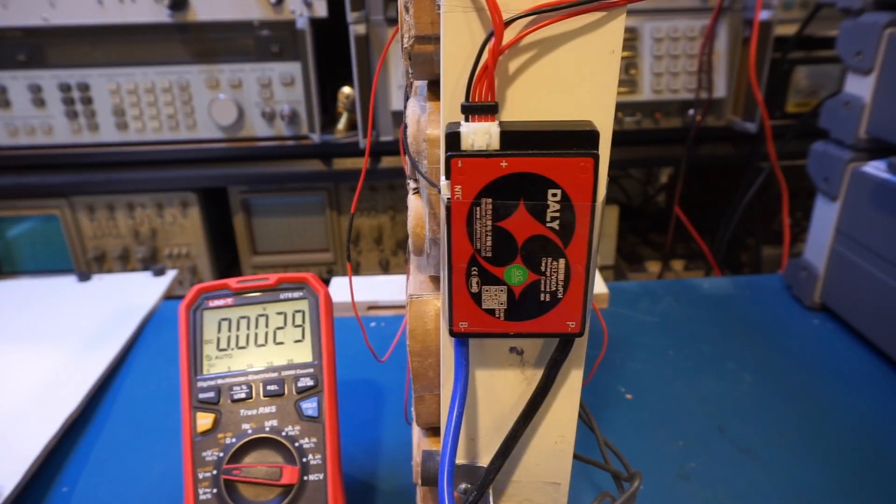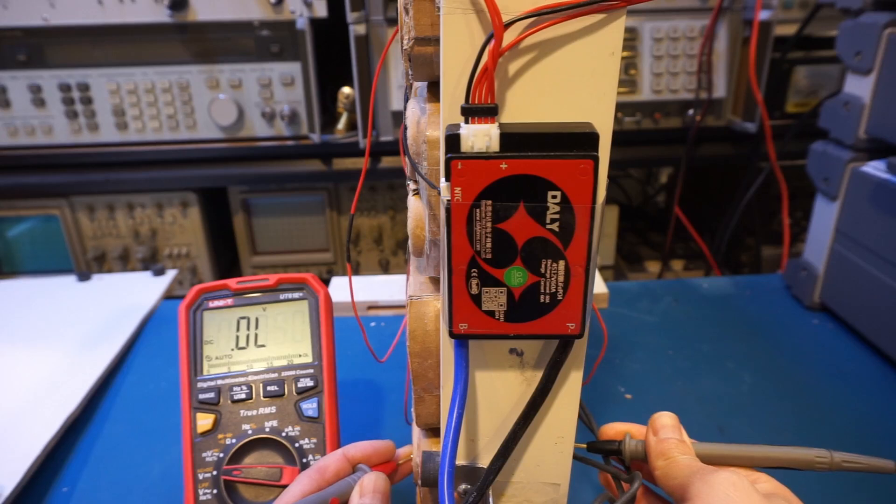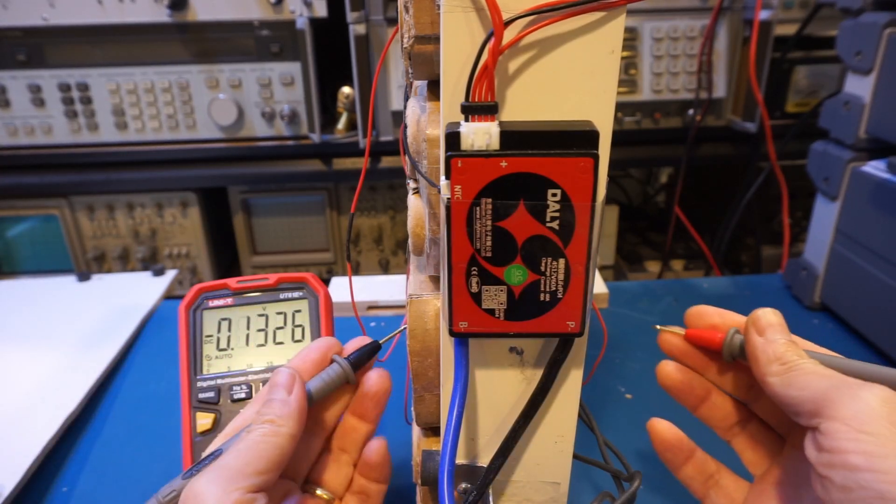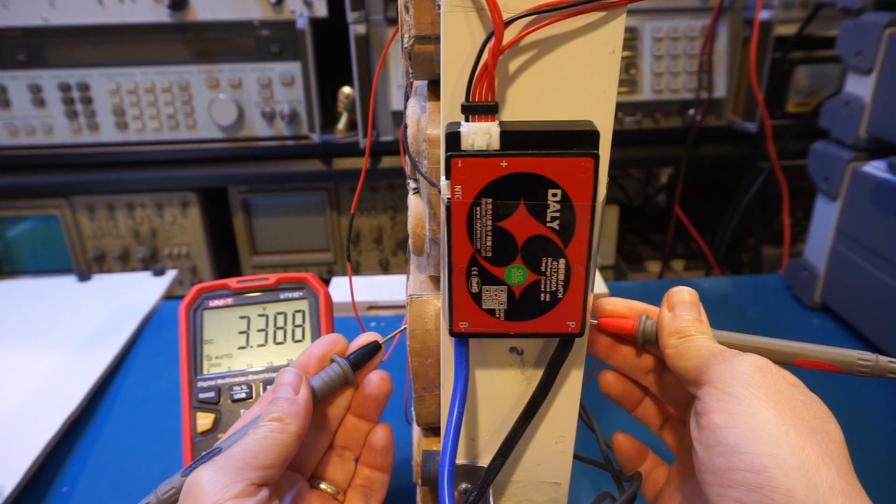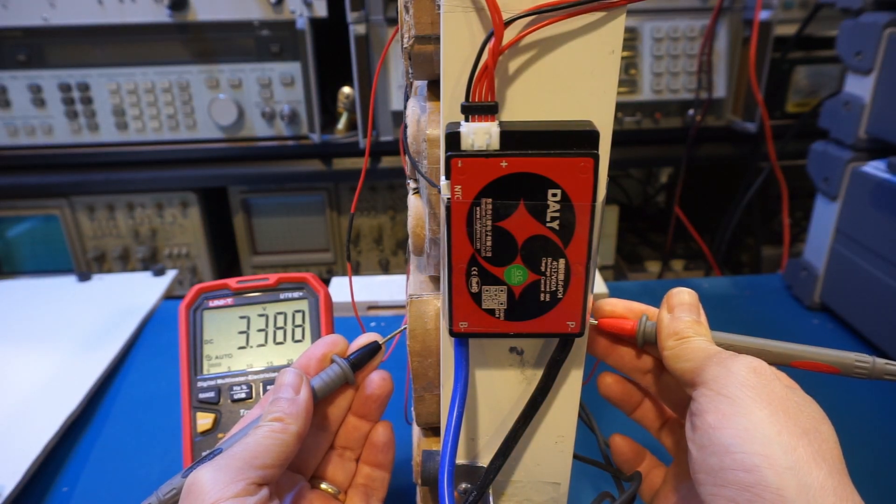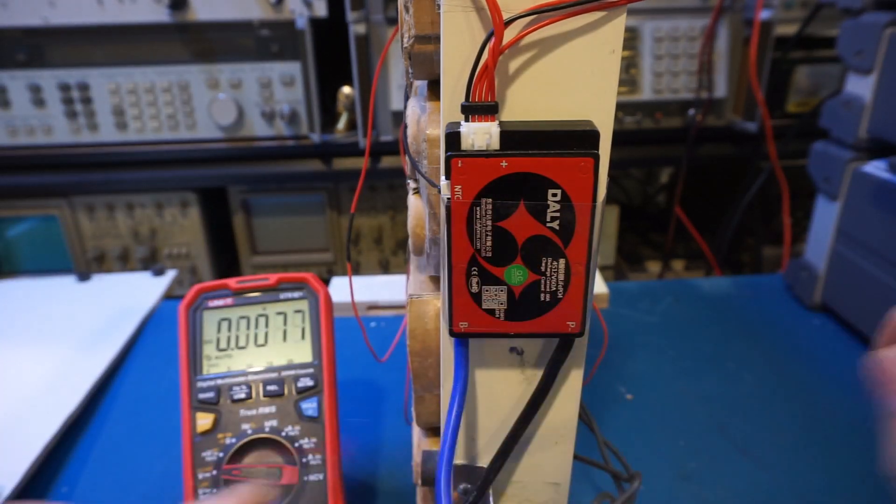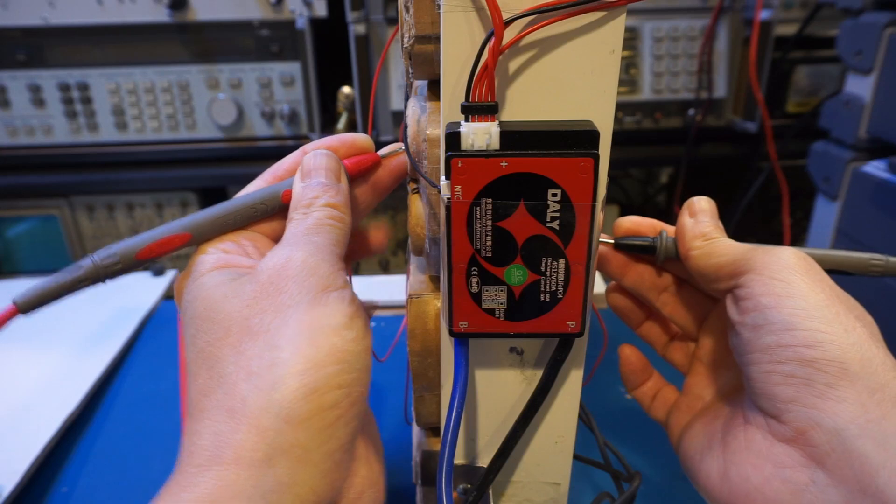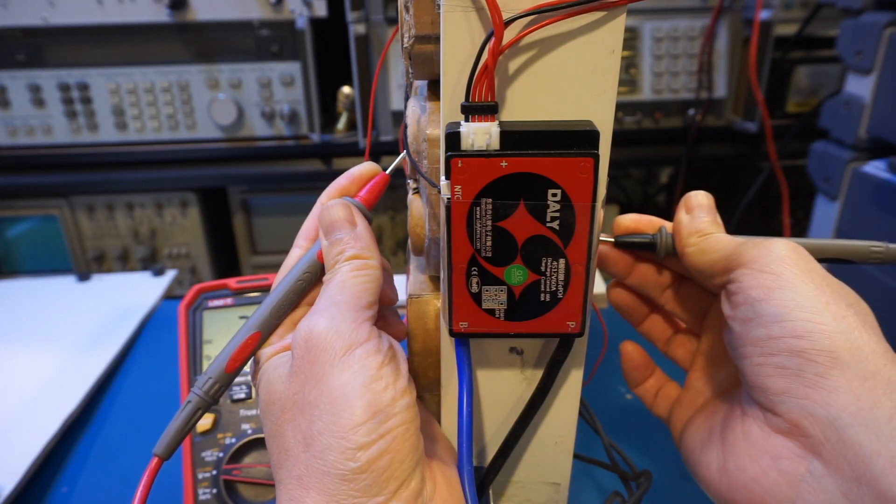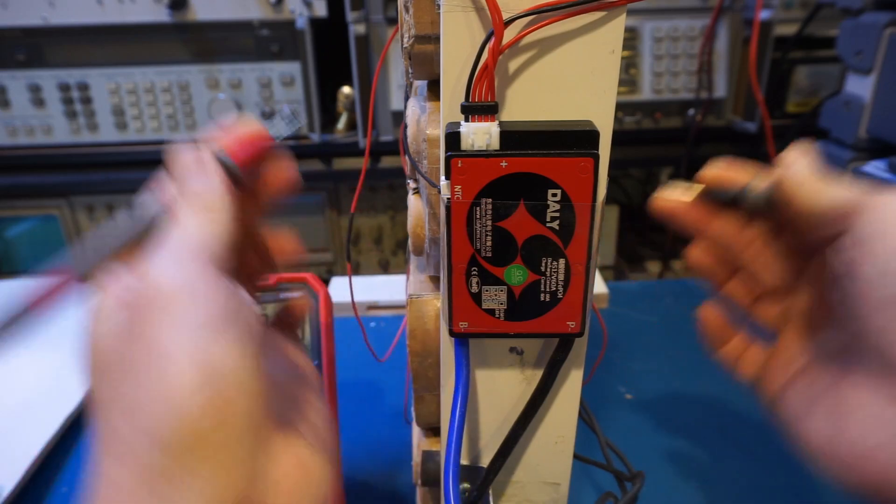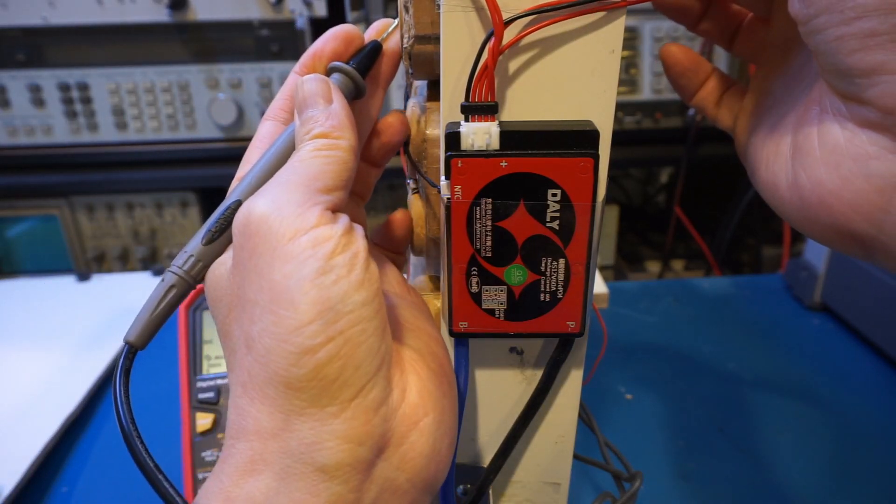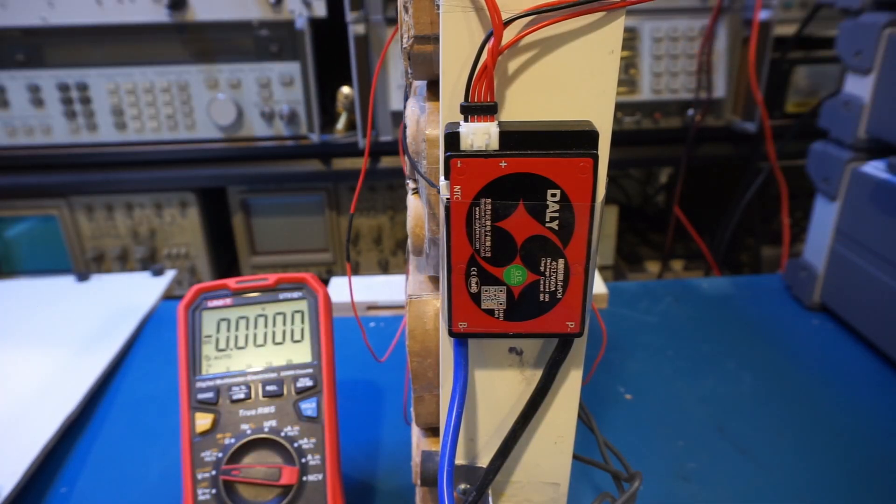All right, I left it charging overnight. And I think it was done a long time ago. Let's start with the bottom one. 3.399. The next one. 3.389. Okay, there's a 10 millivolts difference. And 3.379. Overall, I think the balancing result is pretty good. It's actually within spec.